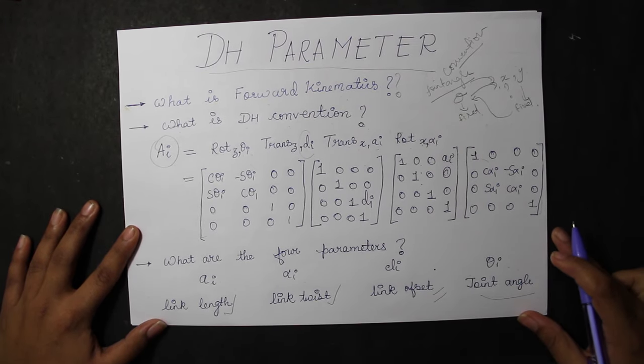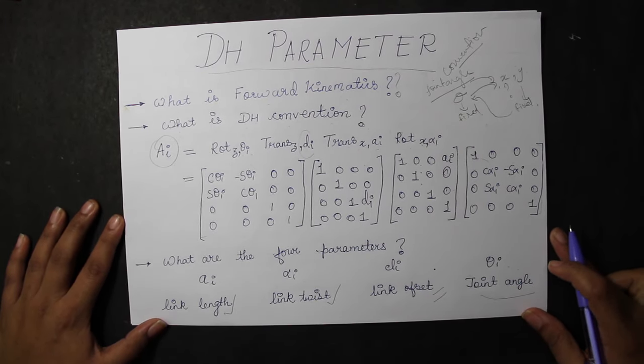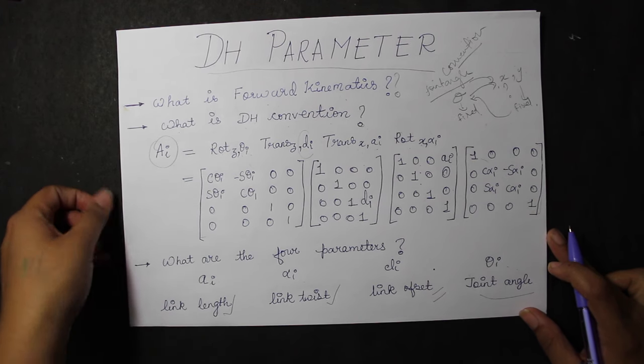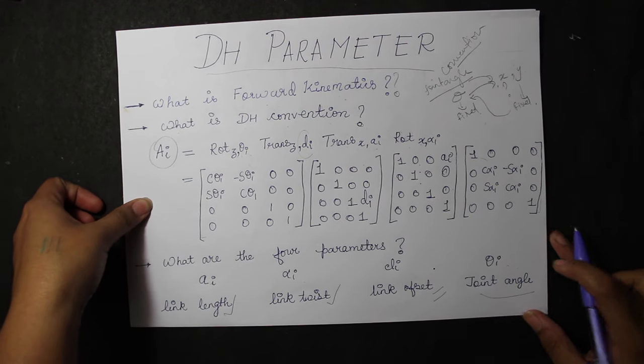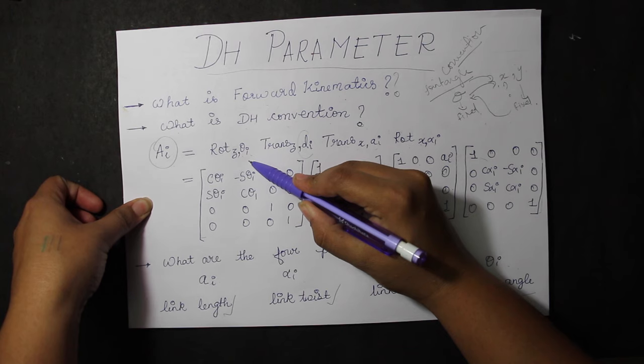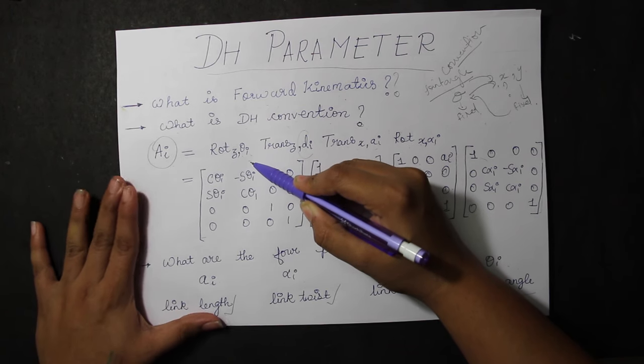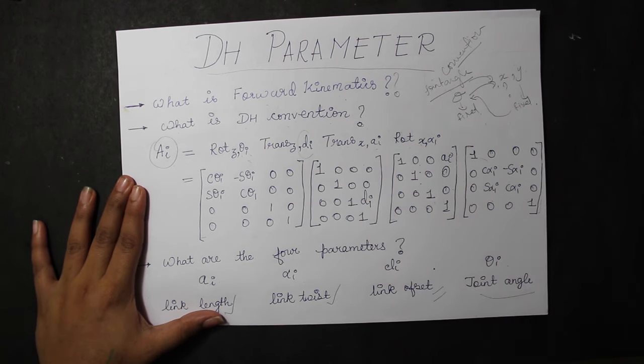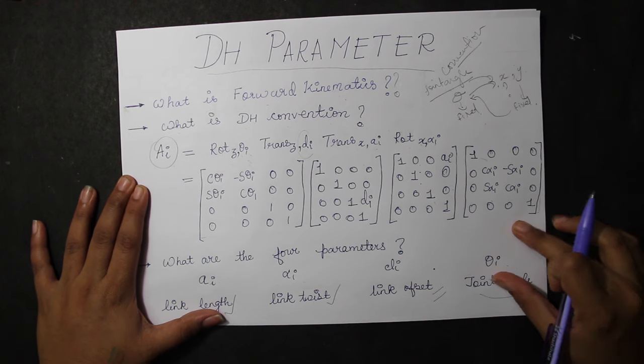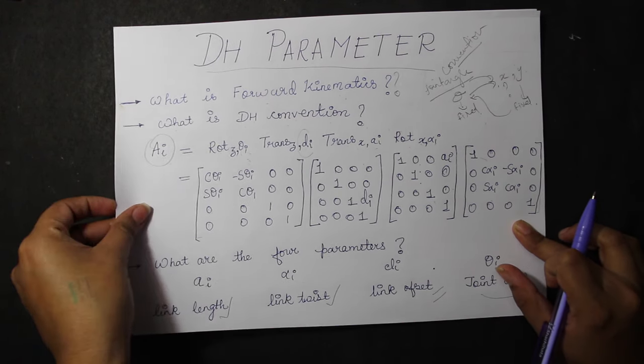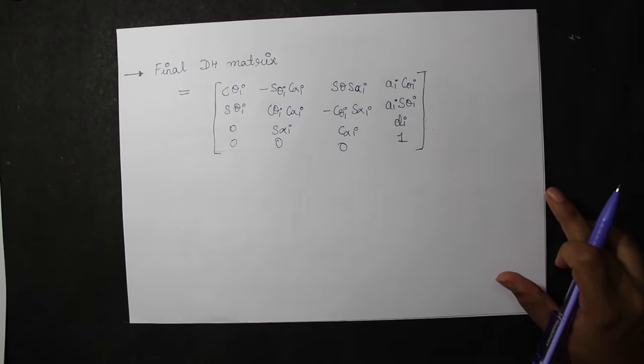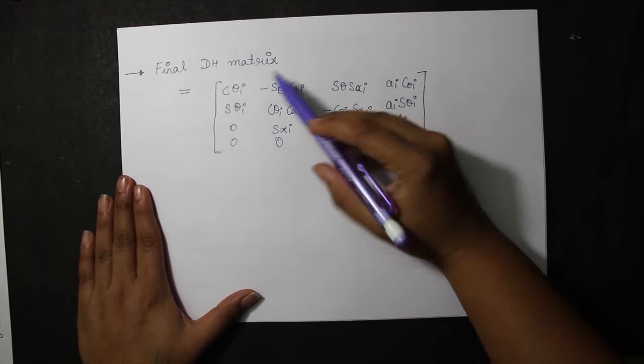We have here rotation of Z for an angle of theta I. I have already taught you how to attain this and all the four matrices similarly. When we multiply all the four matrices, we attain a formula comprising of AI, alpha I, DI, and theta I.